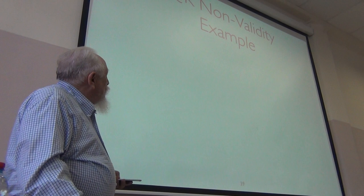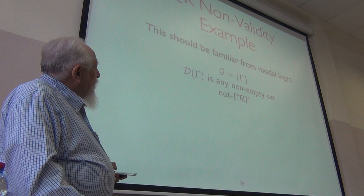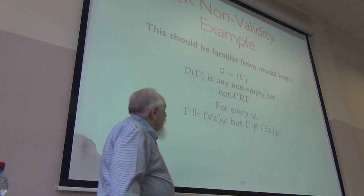So here's a very simple example, and it's an example you probably all know. Take a one world model with nothing accessible to it. It's not even accessible to itself. Then at that model, at that world rather, this is true, but the existential is not.